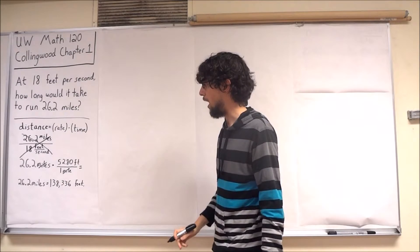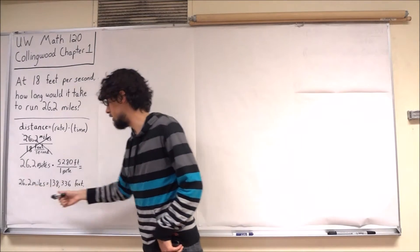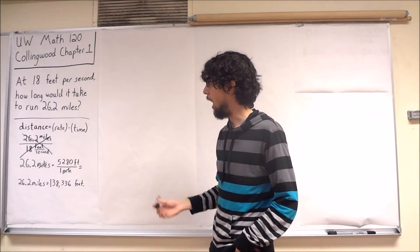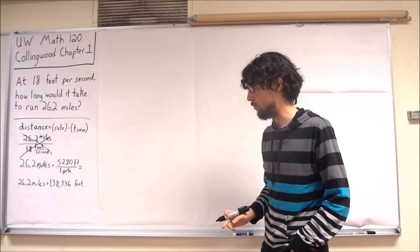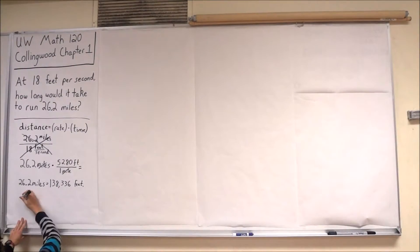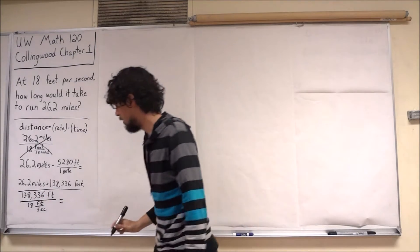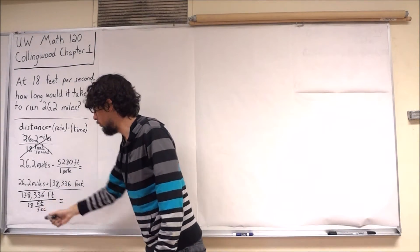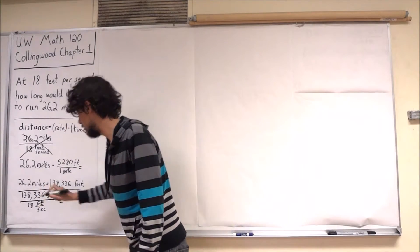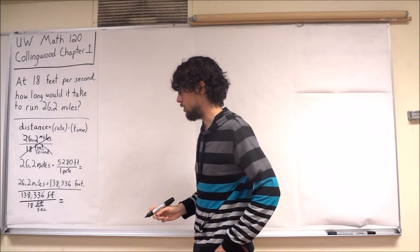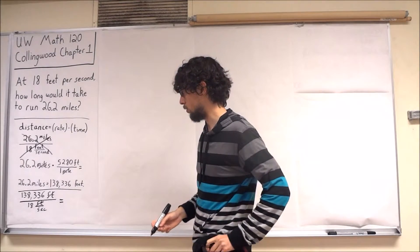So now that I've rewritten my total distance in terms of feet, I can proceed just using my formula that distance equals rate times time. So I have my total distance over my rate, my feet will cancel, and I just need to do the division in order to find the total number of seconds.